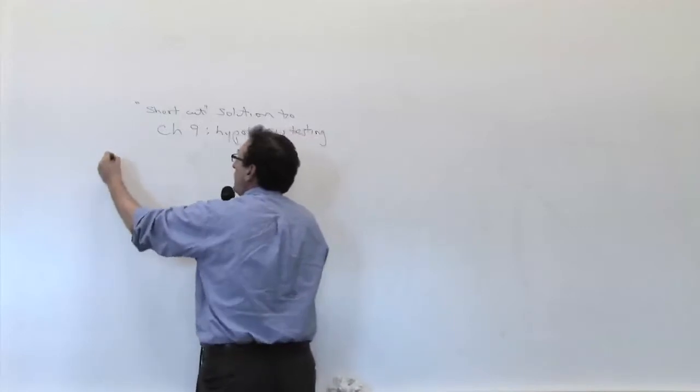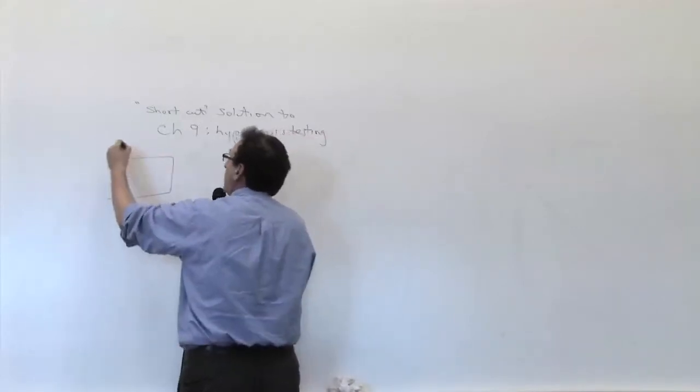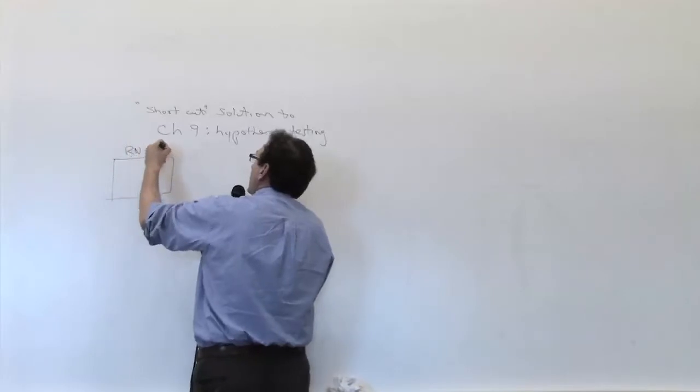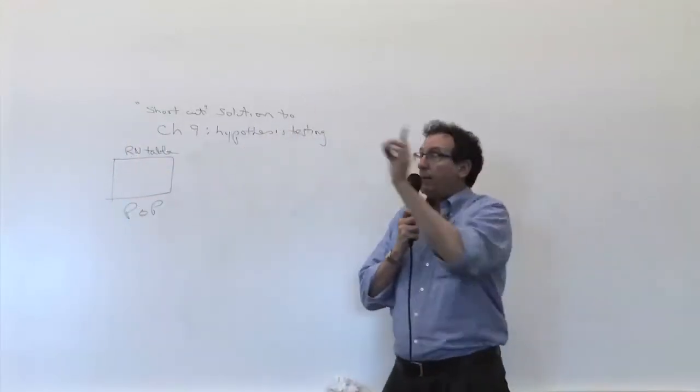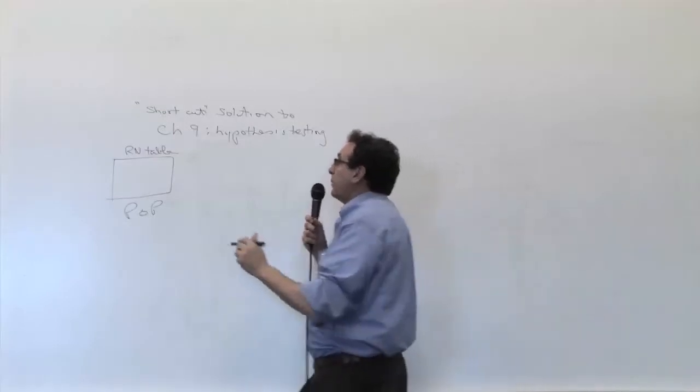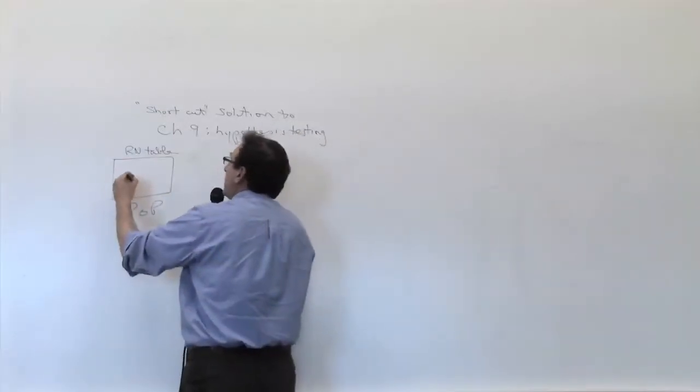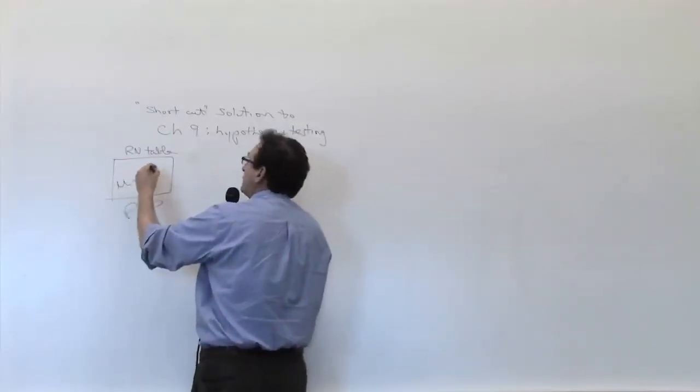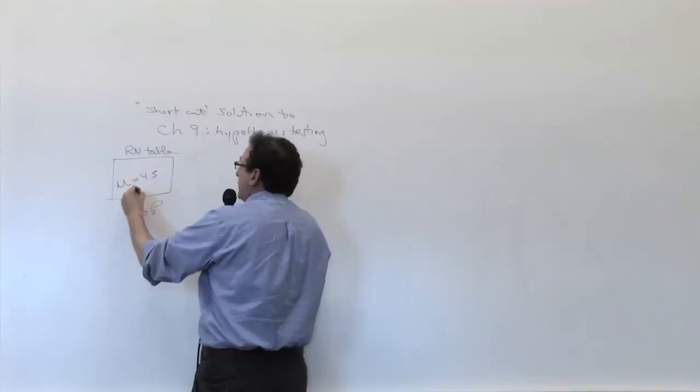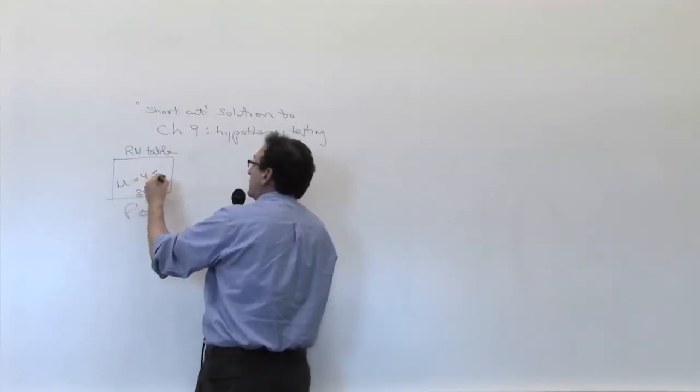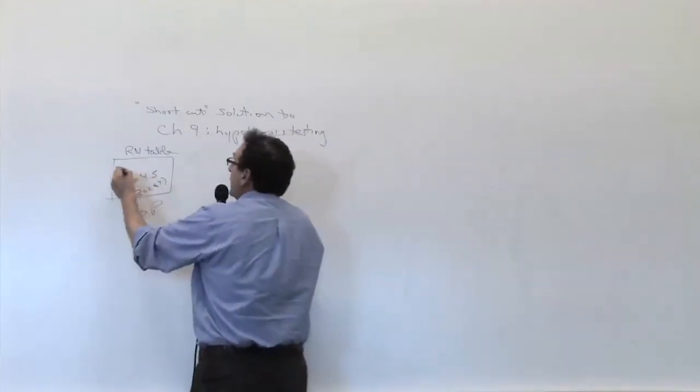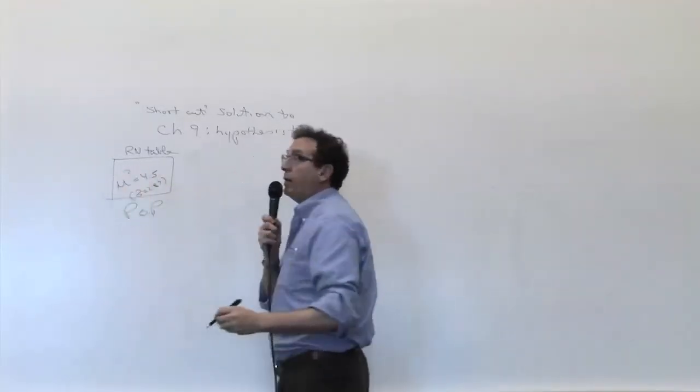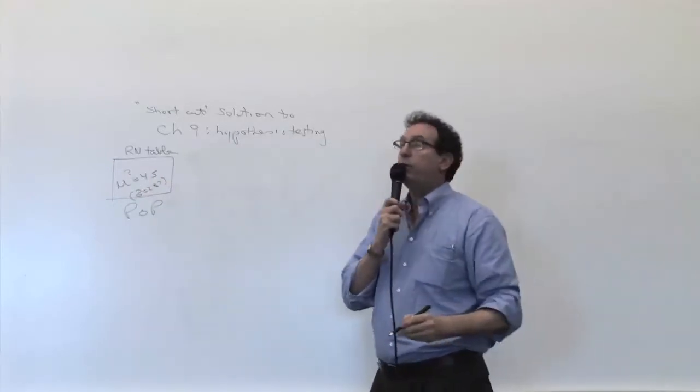The problem is we have a random number table in the back of the book. That random number table is our population. It could be the population of everybody in the United States, it could be the population of those individual numbers in the back of the book. We happen to know that a good random number table has an average of 4.5 and a sigma of 2.87 as we established several times already throughout the previous parts of the spinner assignment. So somebody would like to know if a brand new random number table that was published truly has a value of 4.5 or not.